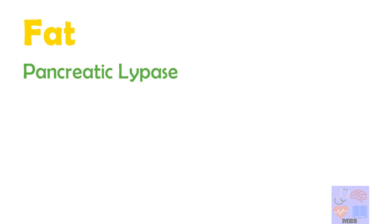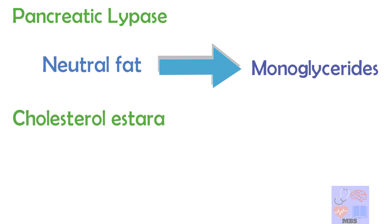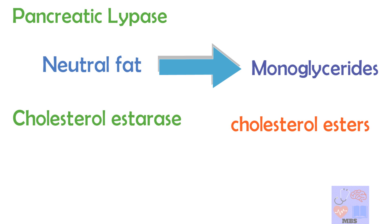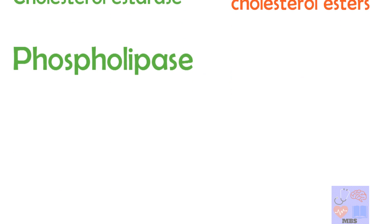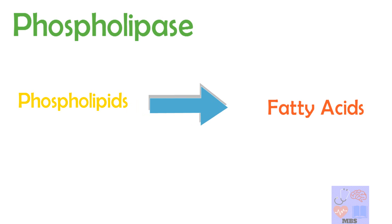For fat digestion, the main enzyme is pancreatic lipase, which hydrolyzes neutral fat into monoglycerides. The remaining two enzymes are cholesterol esterase, which causes hydrolysis of cholesterol esters, and phospholipase, which splits fatty acids from phospholipids.